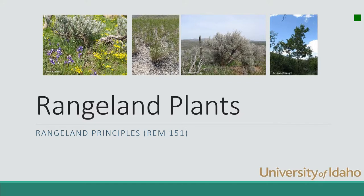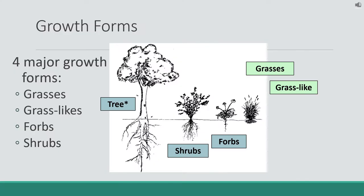Today we're talking about physiology and morphology of rangeland plants. There are four major growth forms that we divide rangeland plants into, and that's grasses, grasslikes, forbs, and shrubs.